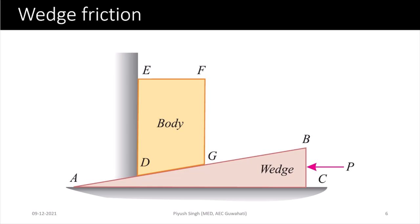The body and the wedge are in contact, so there will be relative motion along face KB of the wedge and face DG of the body, resulting in friction between these two surfaces. The side ED of the body is in contact with the vertical wall, so there will also be friction between the body and the wall.